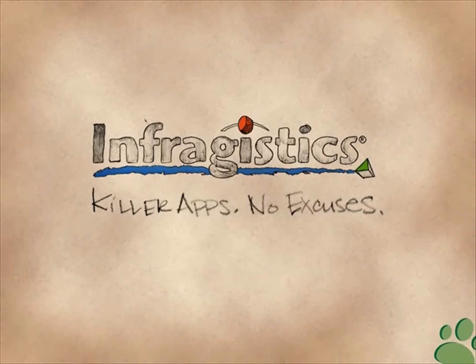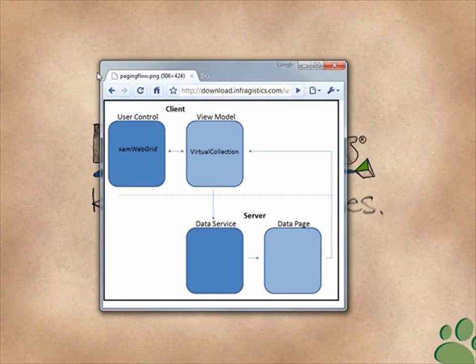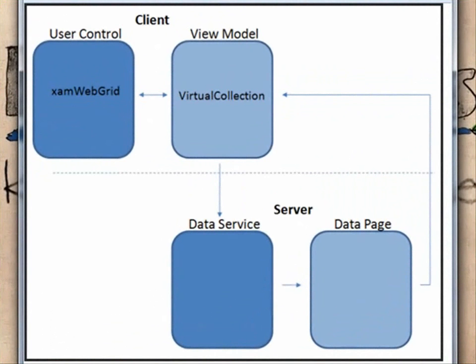Before diving into code, let's review the flow of how everything works. We have a Silverlight user control with a XAM web grid that talks to a ViewModel class. Within the ViewModel there's an instance of the virtual collection class. Once it starts binding to the grid, when it reaches an index position with no data, it raises an event saying it needs data, allowing the application to contact the server — in this case, a data service that queries the database.